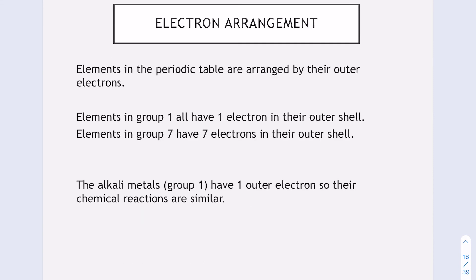Hopefully you've noticed a pattern. The elements in the periodic table are arranged by their outer electrons. If we take group one elements for example. Hydrogen has an electron arrangement of 1. Lithium is 2, 1. Sodium is 2, 8, 1. Potassium is 2, 8, 8, 1. If you look, they all end in one. So elements in group one always have one outer electron.